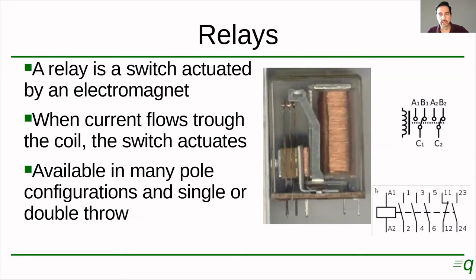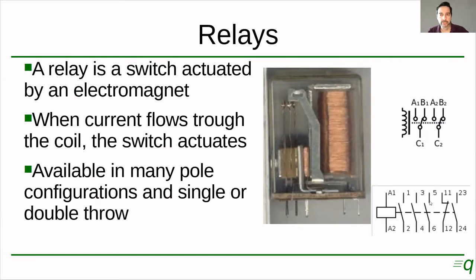This one here is the same idea, only the contacts are different. This symbol you will see more in industrial electronics. This is the coil — A1 and A2 represent the coil. And these are the contacts: 1, 2, and 3 — a single pole, single throw, normally open switch. The switches are drawn in the normal position, meaning when the coil is not energized. So when the coil is energized: one connects to two, three connects to four, five connects to six, and 23 connects to 24.